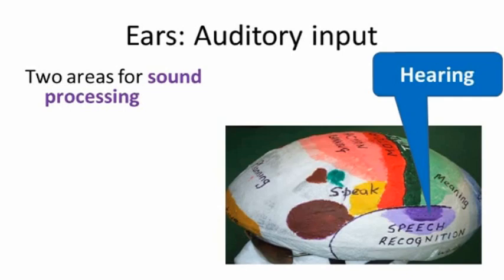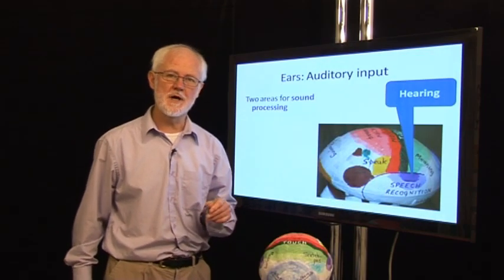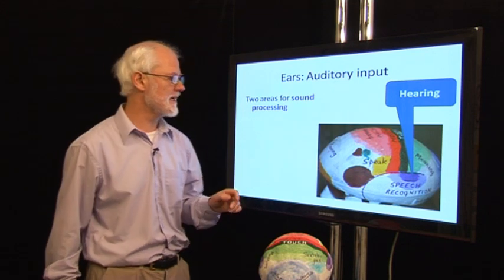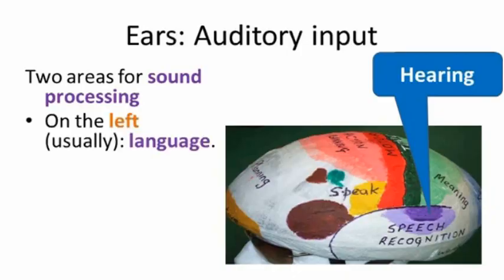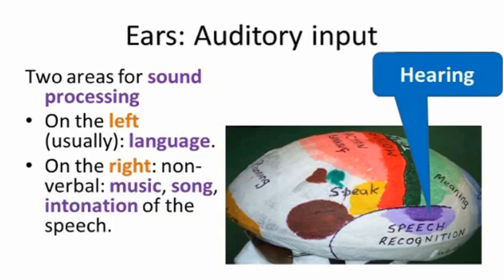Looking at the ears or the auditory system, we have two areas in the brain for processing sound. Most people process speech on the left. But on the right, it's used for music and song and also for the intonation or rhythm in the voice. So the two sides are doing different jobs and working together.